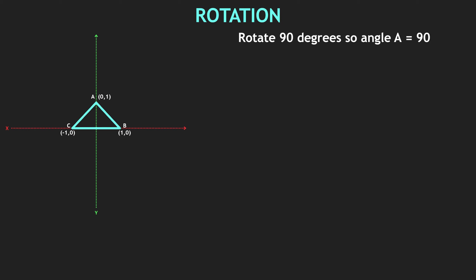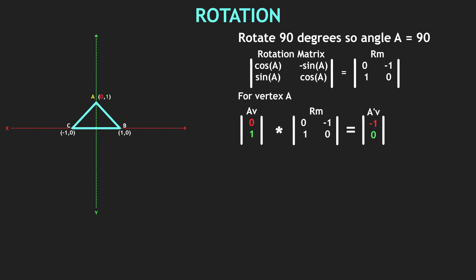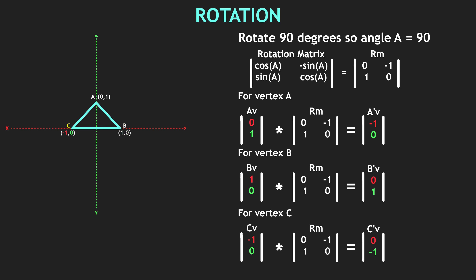Let's do that for rotation. Here is our triangle and we want to rotate it 90 degrees. We plot a rotation matrix with the formulas we've seen earlier. By solving it, we get our rotation matrix. Then, similarly to scale, we multiply our vectors with the rotation matrix to get new vectors. Same calculations for vertex A, B, and C, and with new A, B, and C we get our rotated triangle.